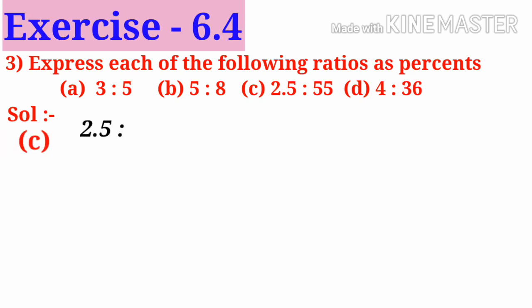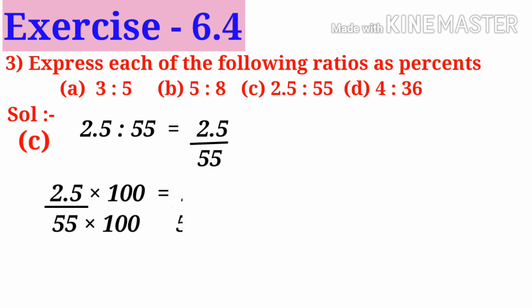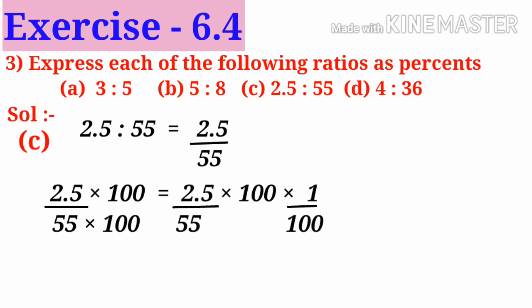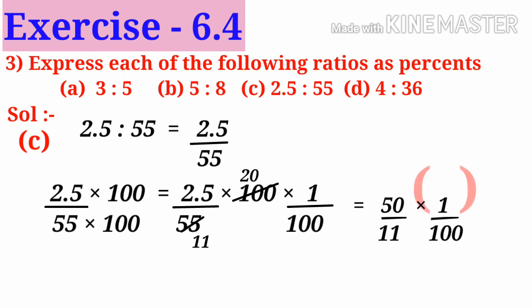C: 2.5 is to 55 can be written as 2.5 by 55. Multiply both numerator and denominator by 100, that is 2.5 by 55 into 100 into 1 by 100. On simplification by 5, we get 2.5 into 20 is 50 by 11 into 1 by 100. Since 1 by 100 is denoted by the symbol percent, 50 by 11 percent is the answer.